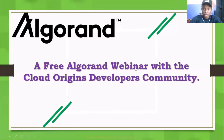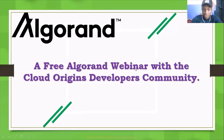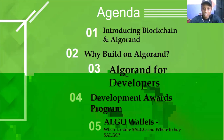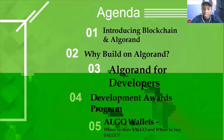We want to be talking about these five agenda items: number one, introducing blockchain; number two, Algorand and why should the developer build on Algorand; number three, benefits of Algorand for developers; number four, development award programs; and number five, Algorand wallets. All of these things we are going to be talking about.